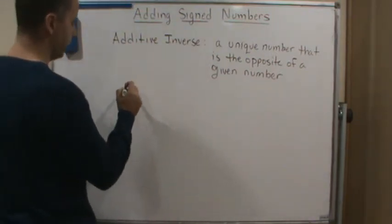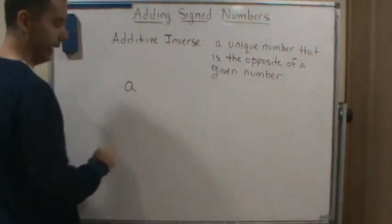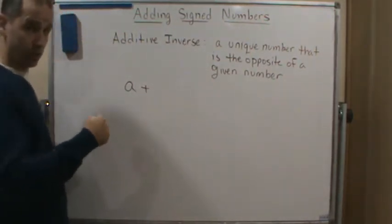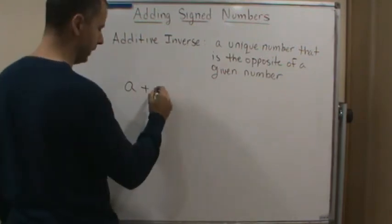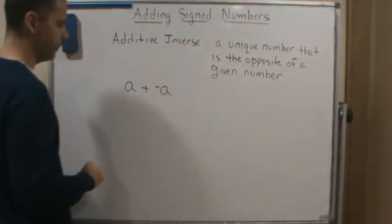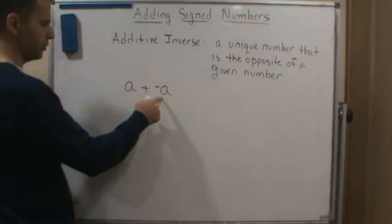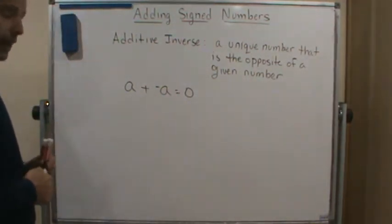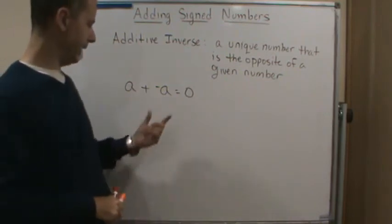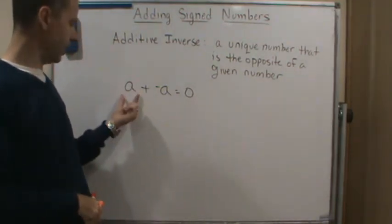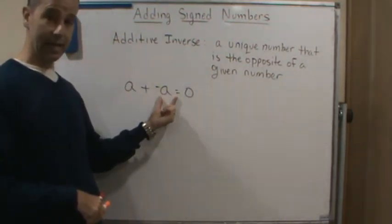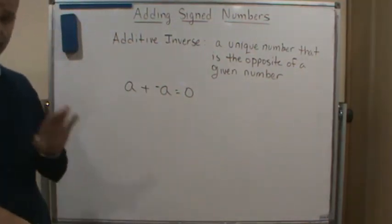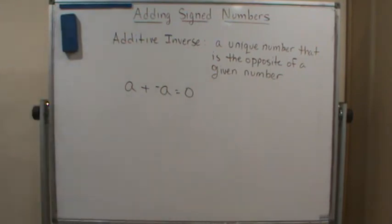So if I take any number a and I add its inverse, additive inverse, or the opposite, right, which would be minus a, if I add those two together, I get zero. And so that is how an additive inverse works. So any number plus its additive inverse will always equal zero. And that's important to know.